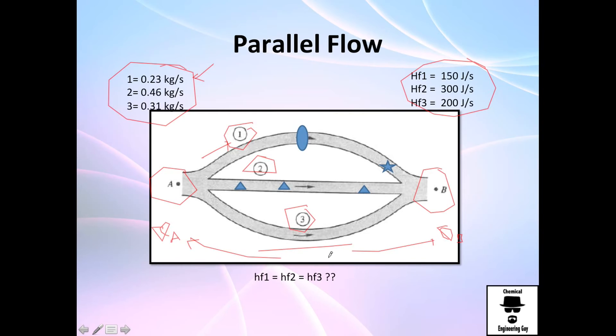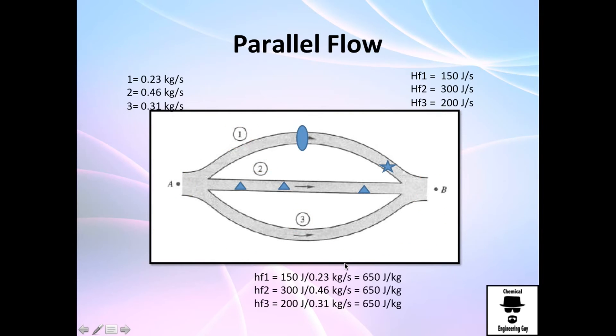What will be the energy loss per each pipe? If we make the calculation of how much energy we lose per kilogram, we get the same amount: 650 joules per kilogram for each pipe.